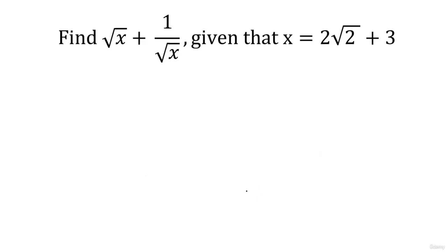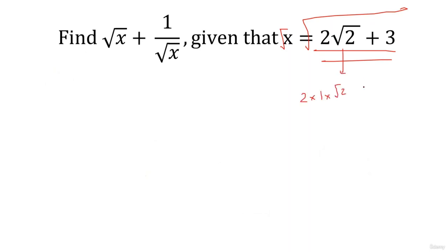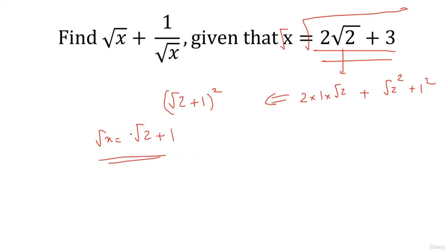Now find √x + 1/√x, given that x = 2√2 + 3. First calculate the positive square root of x. We have 2√2 + 3, and 2√2 can be split as 2×1×√2, so that 3 splits as (√2)² + 1². This means 2√2 + 3 = (√2)² + 1² + 2×√2×1 = (√2 + 1)². Therefore, √x = √2 + 1.